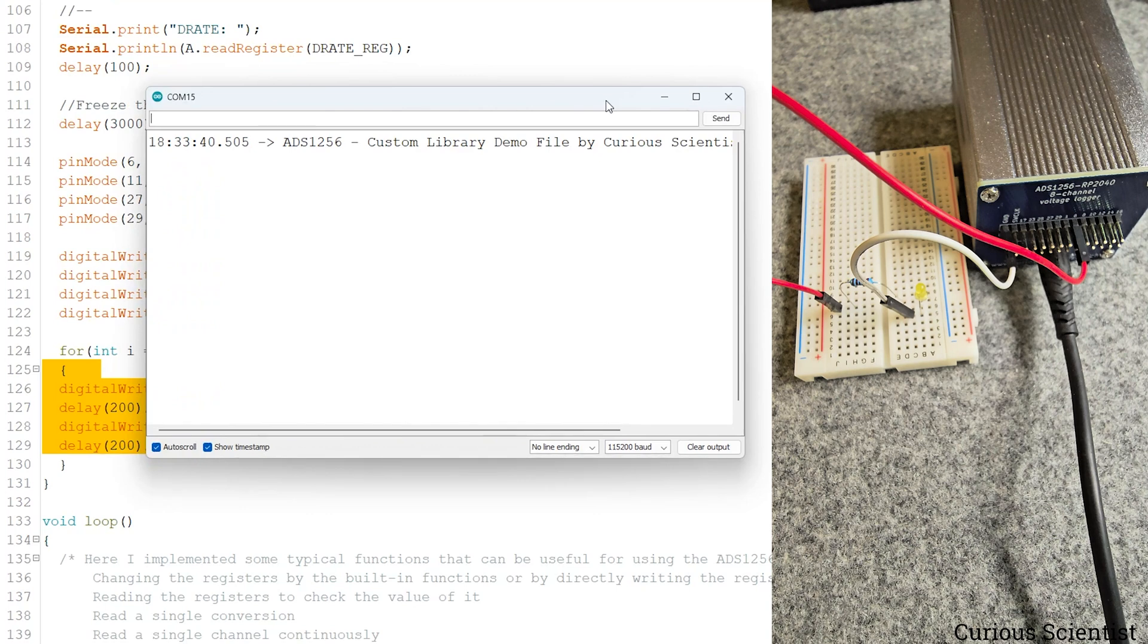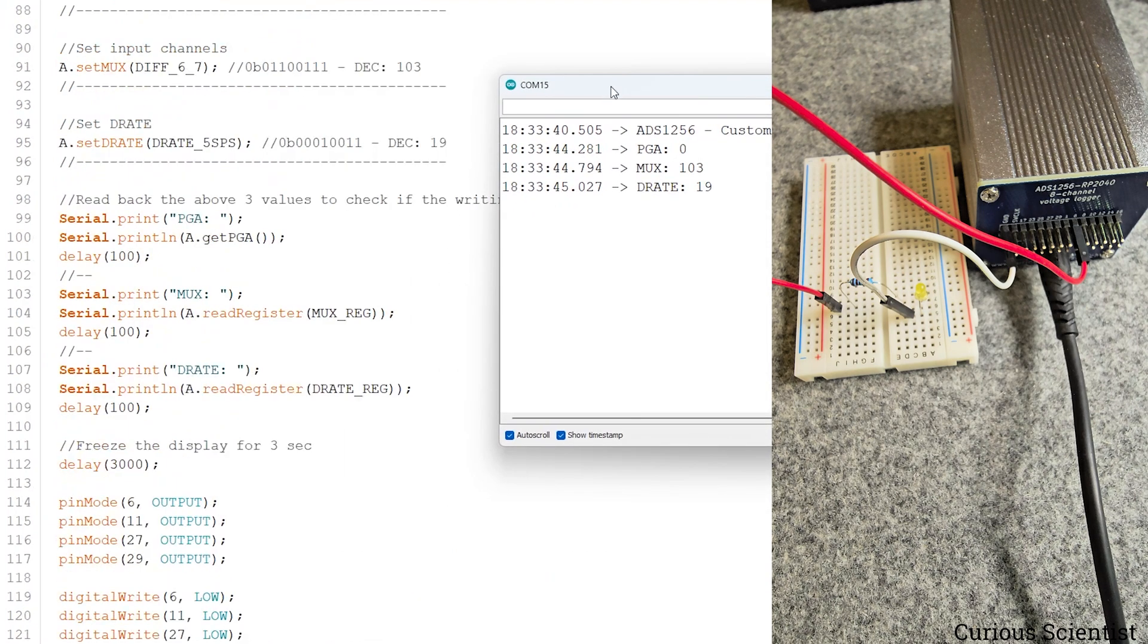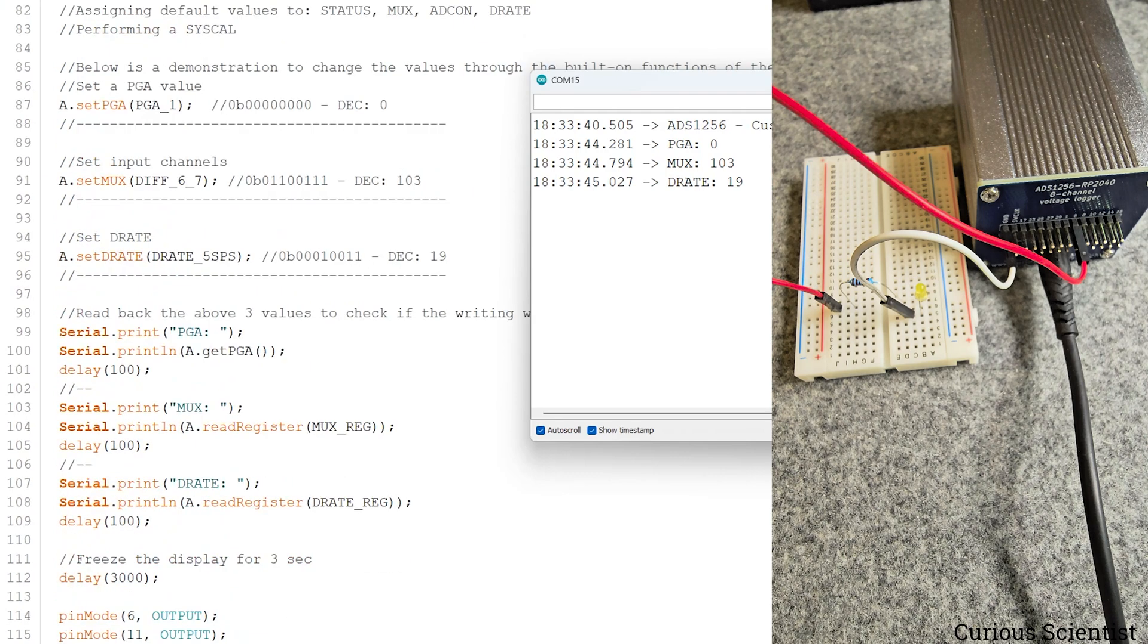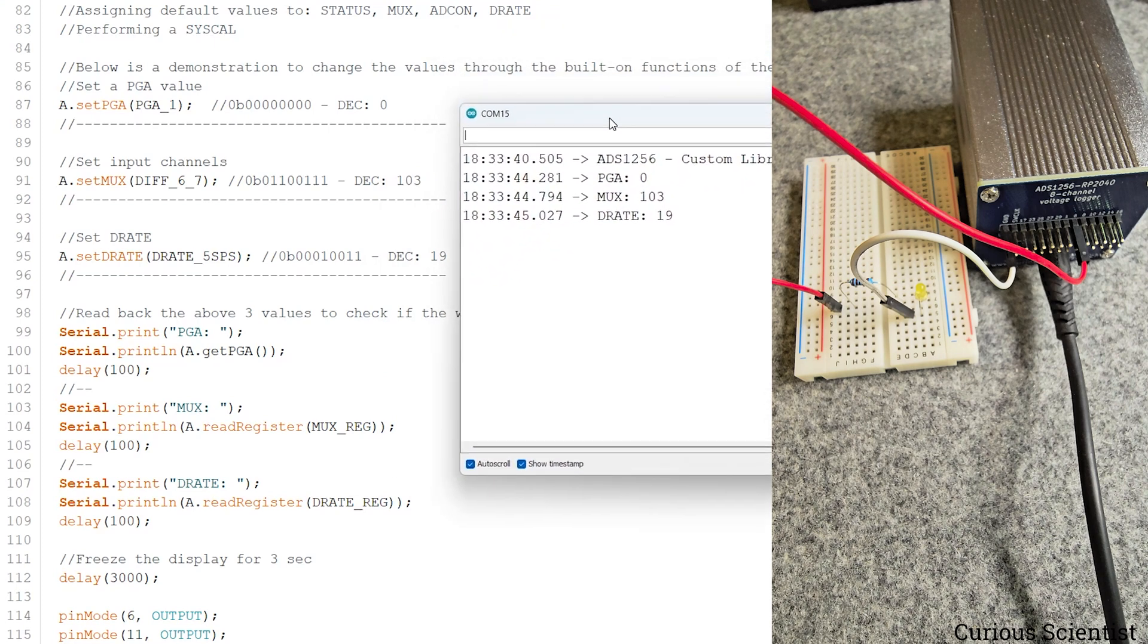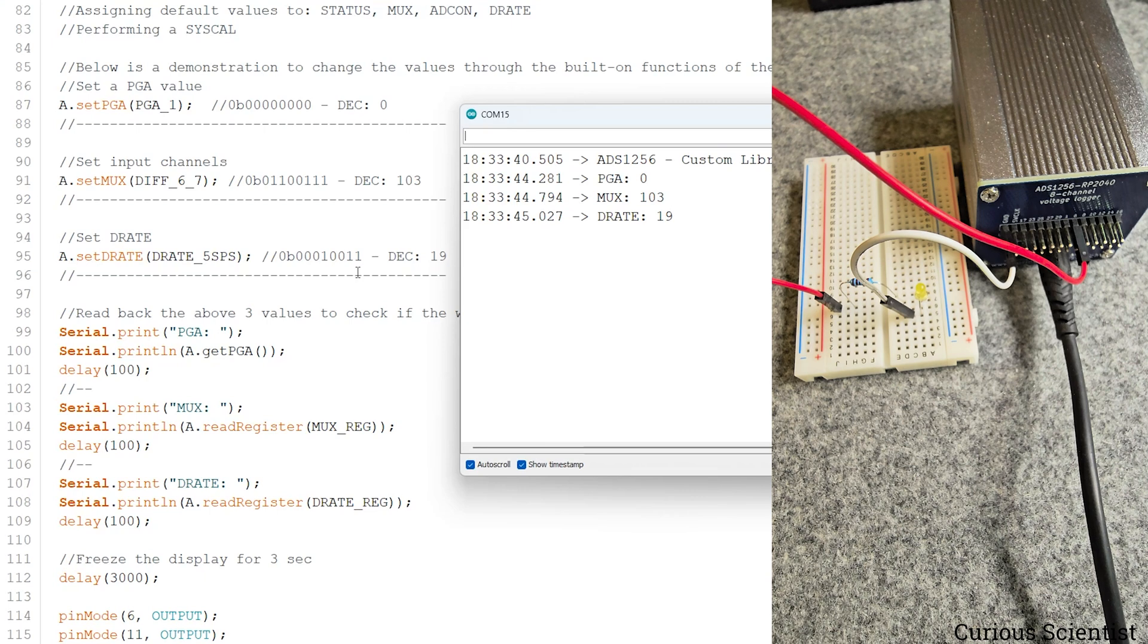It's a good sign that we got the message from the microcontroller. Here, and then you can see the blinking now. So now we have the GPIO pins as well. If I go back a little bit, you can see that the PGA has to be 0, the input channels should be 103, and the D-rate should be 19. Here we actually read these registers from the ADS-1256 and print it on the serial terminal. The numbers are identical, so that means also that the ADS-1256 works. You could see that the thing was blinking, the LED was blinking, so I also consider that as a good experiment.